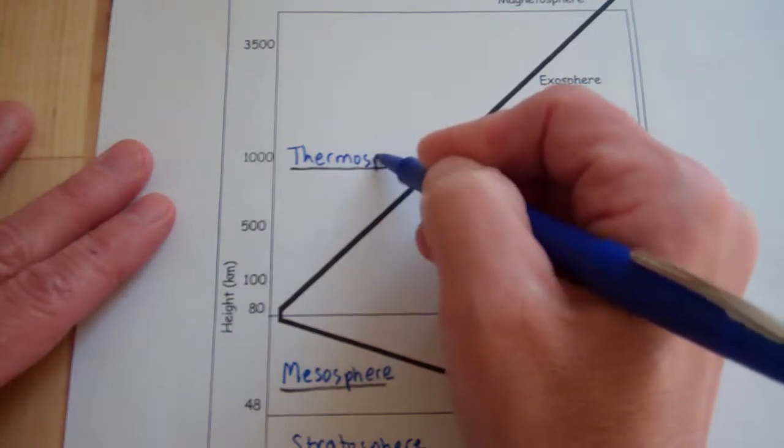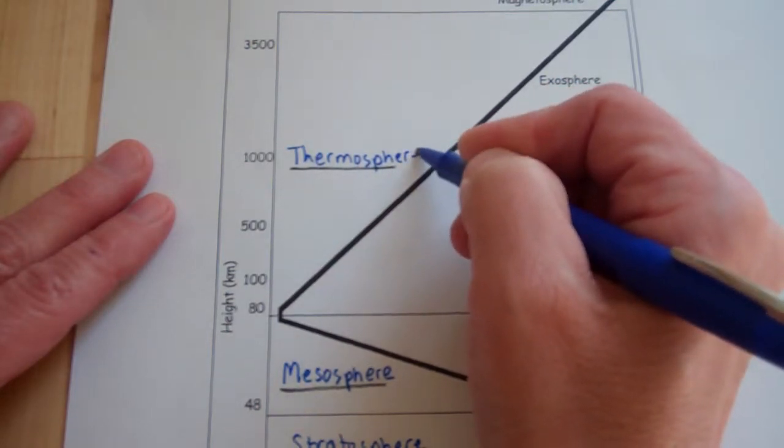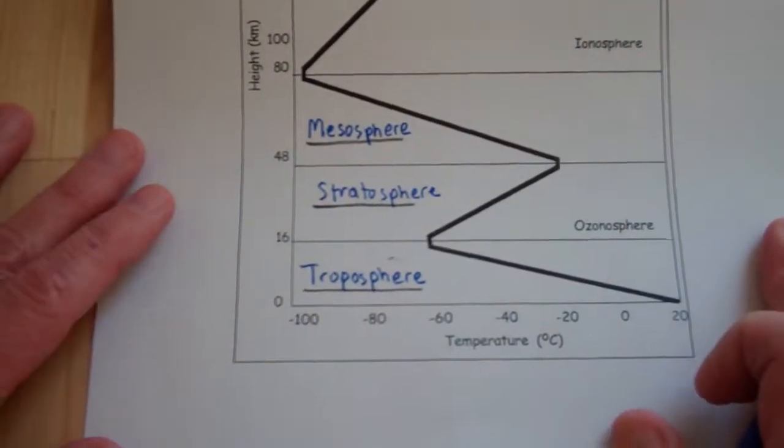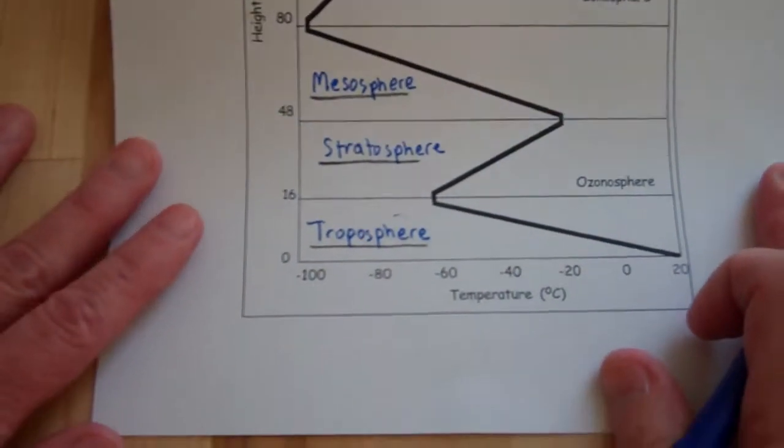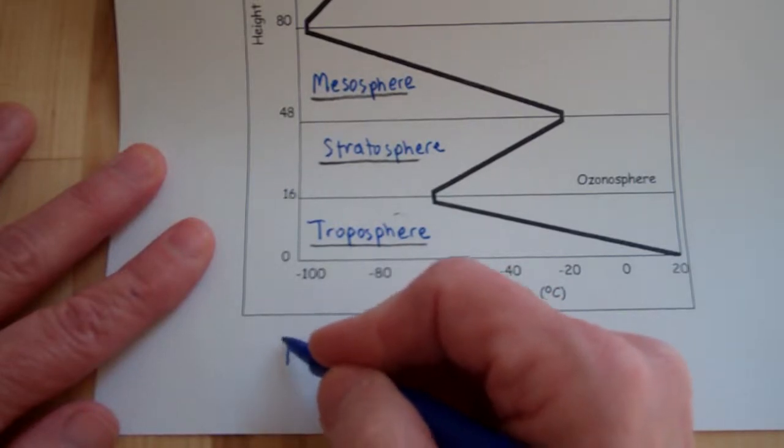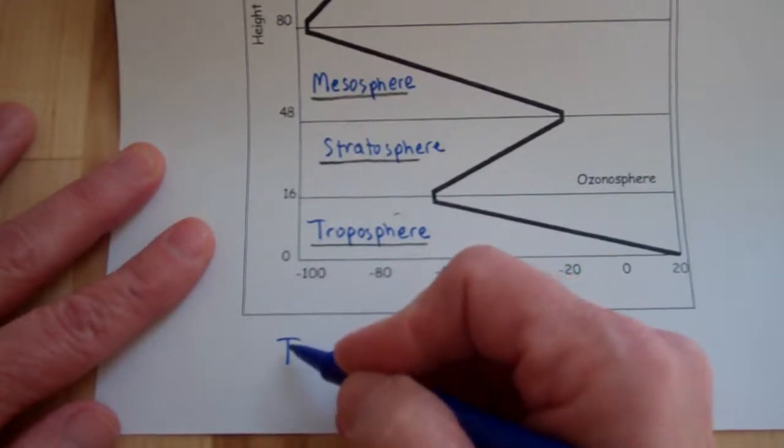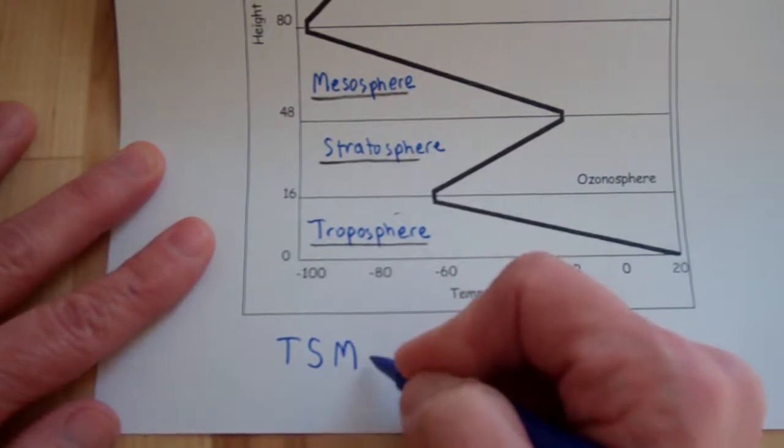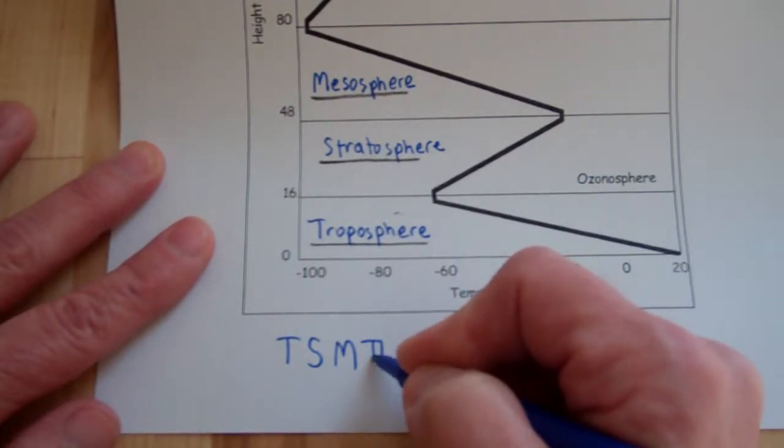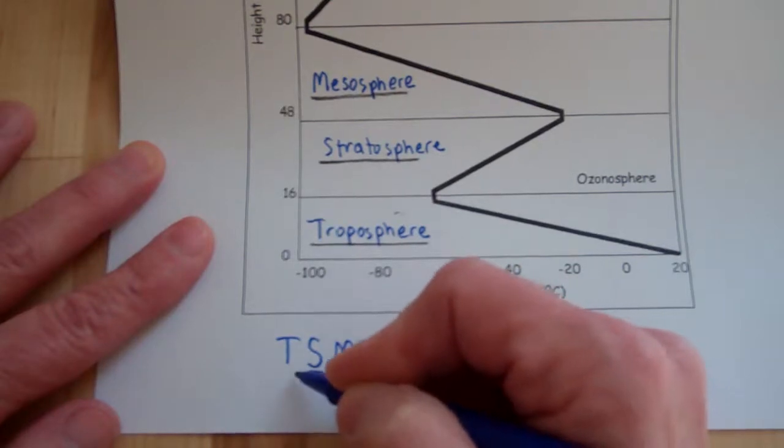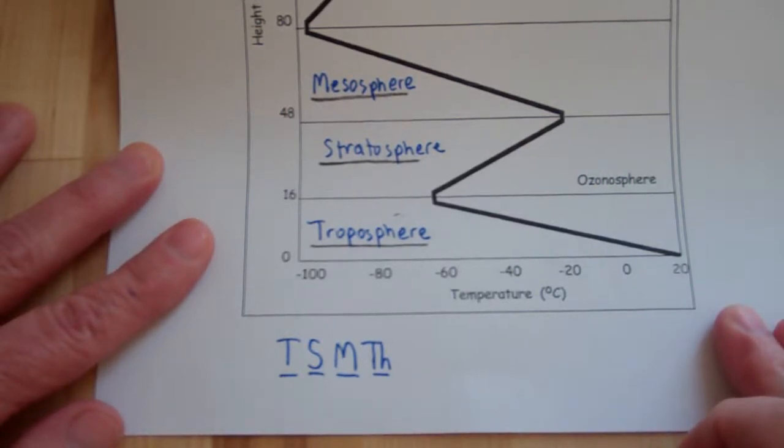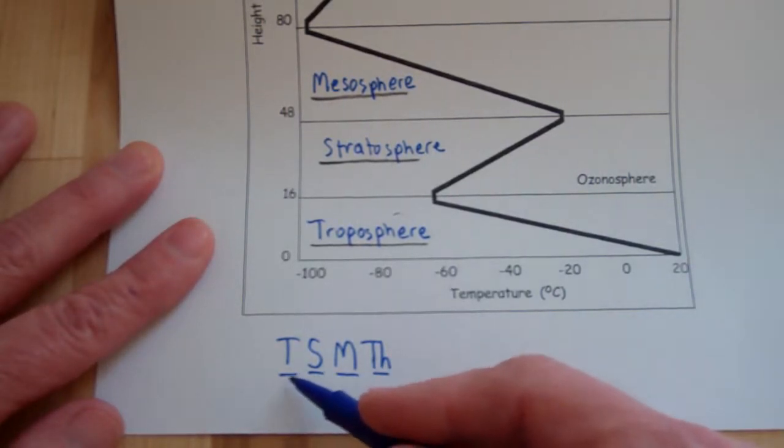Those are the four layers you need to know. So memorize those in order from lowest to highest and then you'll be able to go back and forth. T for tropo, strato, meso, thermo. So make up some kind of a little crazy sentence to help you remember that.